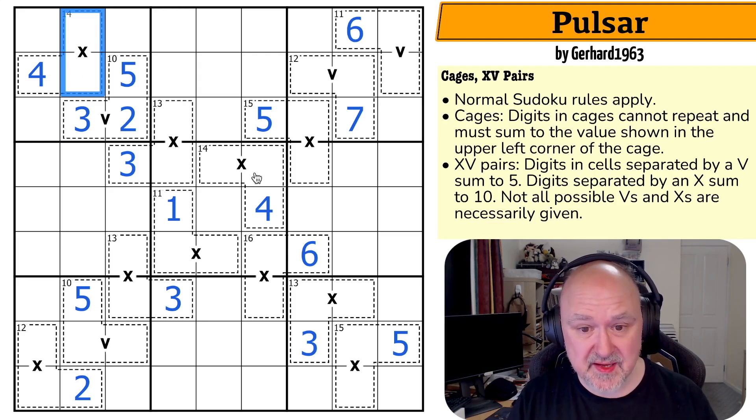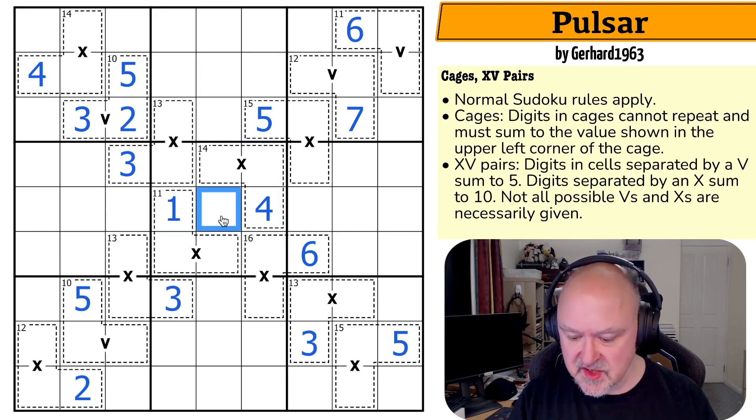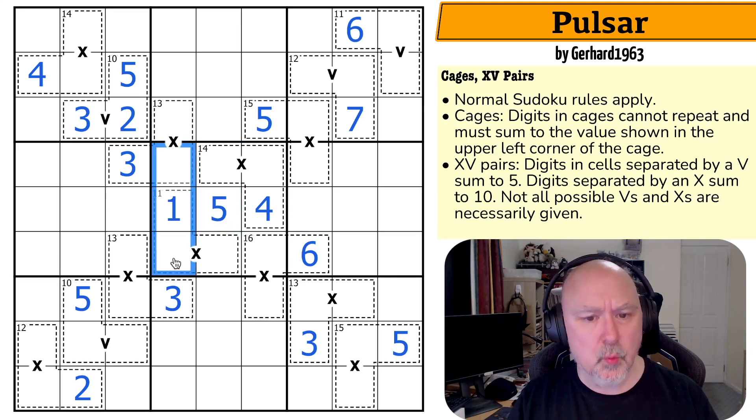So in box five, using that logic, I can see this cell is on an X, this cell is on an X, this cell is on an X and this cell is on an X. So this has to be the five in the box. Why can you never put five on an X? Because the cell on the other side would need to be a five, and because they're all on edges, you'd end up with two fives in a column or a row.